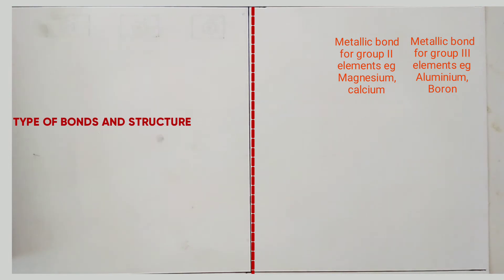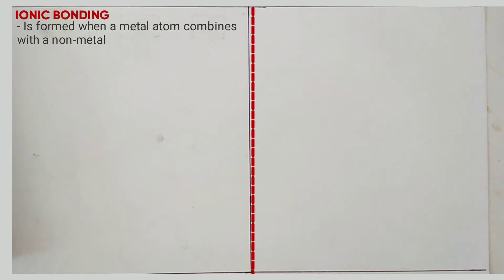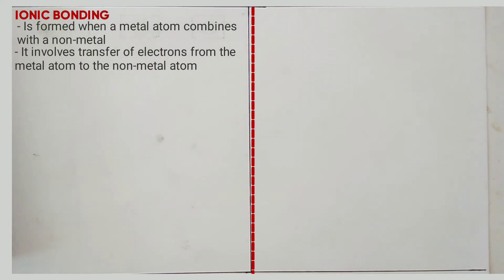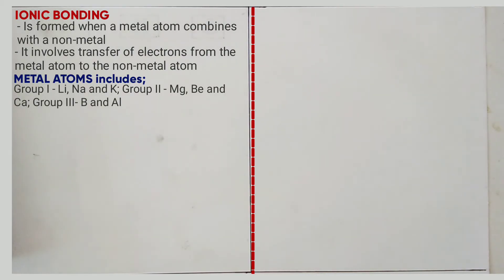The next point is ionic bonding. This is formed when a metal atom combines with a non-metal atom, and involves transfer of electrons from the metal atom to the non-metal atom. Metal atoms include group 1 elements — lithium, sodium and potassium; group 2 elements — magnesium, calcium and beryllium; and group 3 elements — aluminium, boron. Non-metals include group 5 elements — nitrogen and phosphorus; group 6 — sulfur and oxygen; group 7 — fluorine and chlorine.